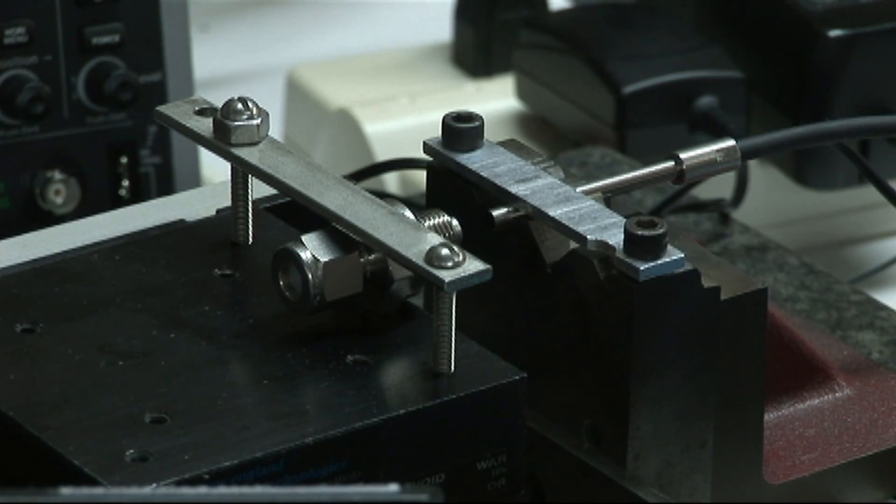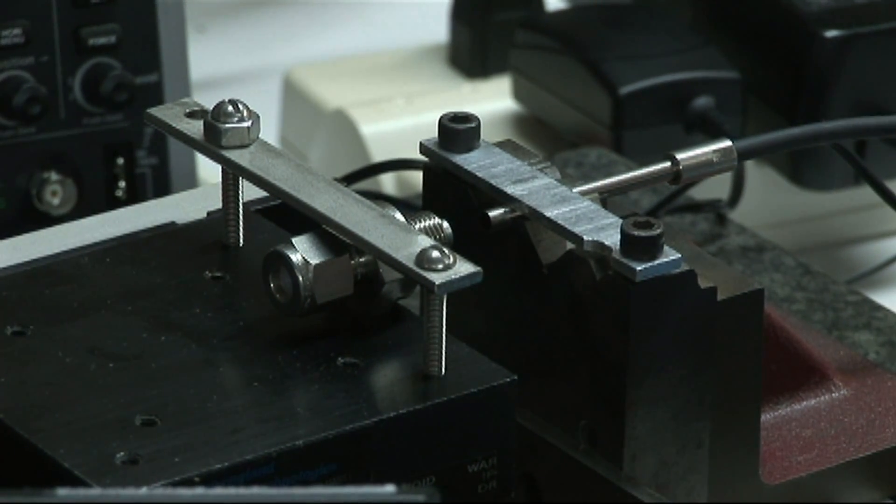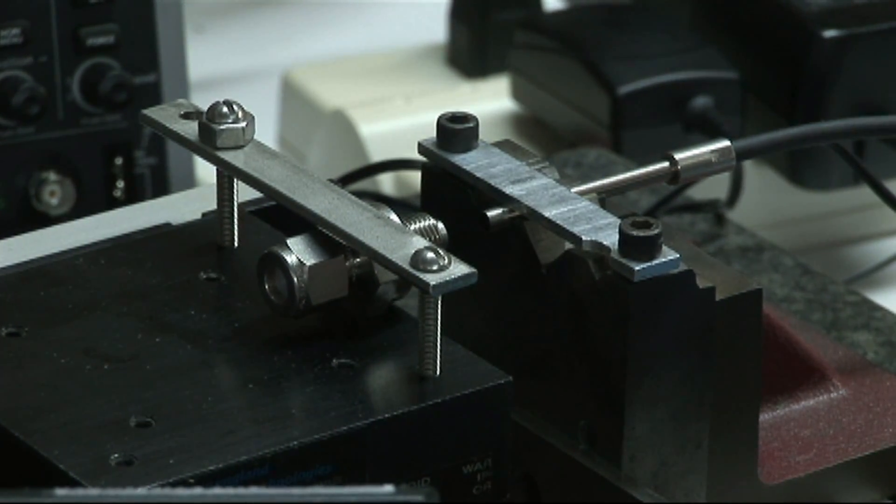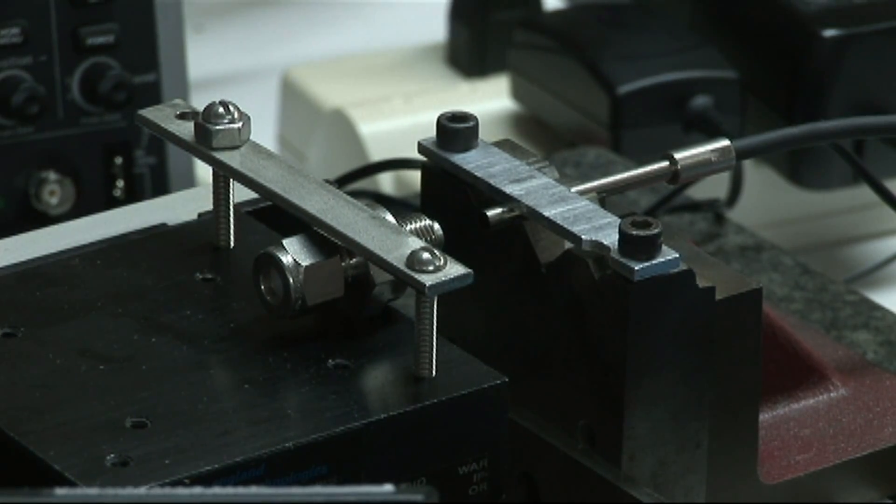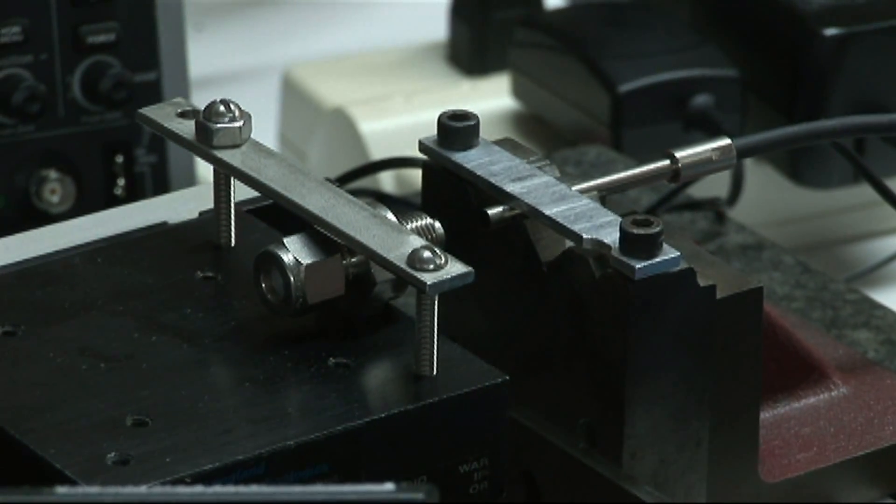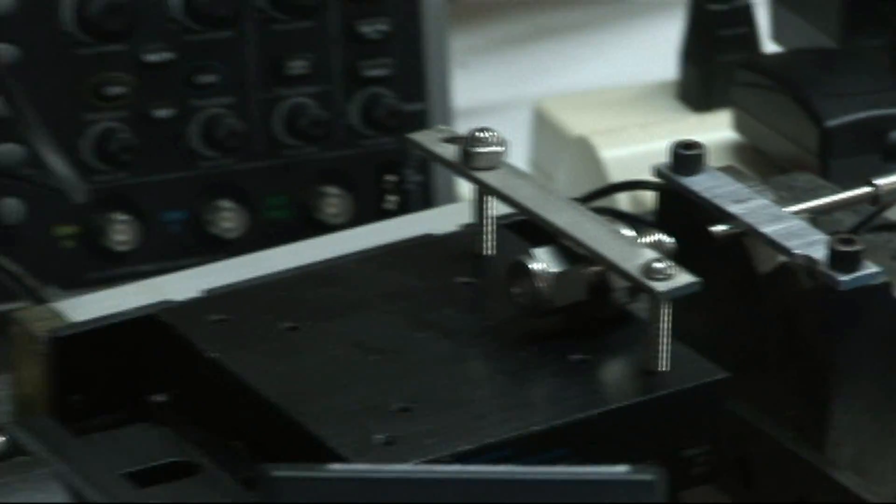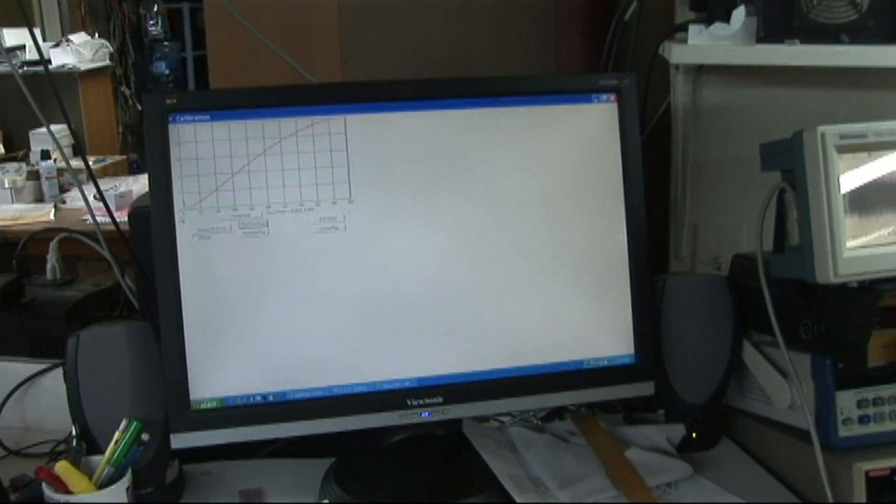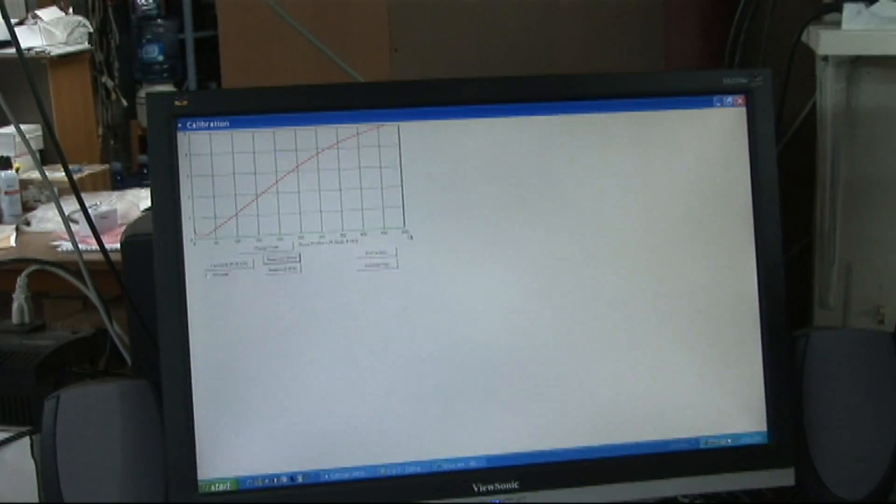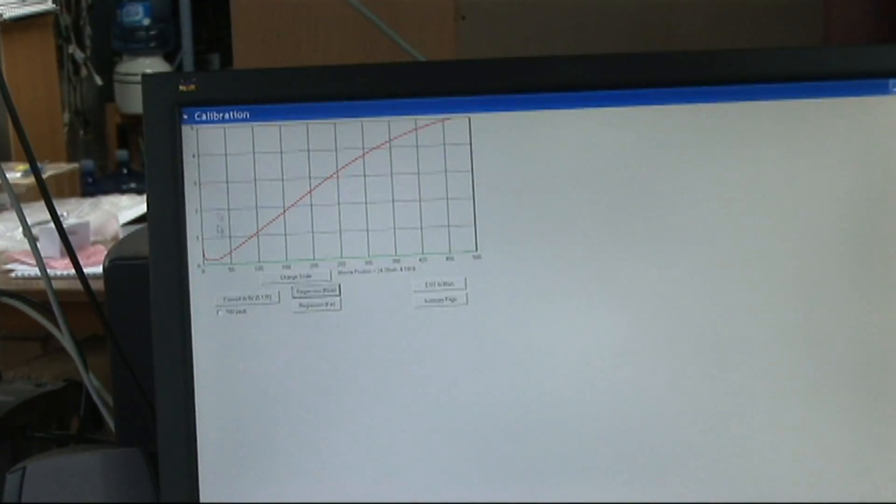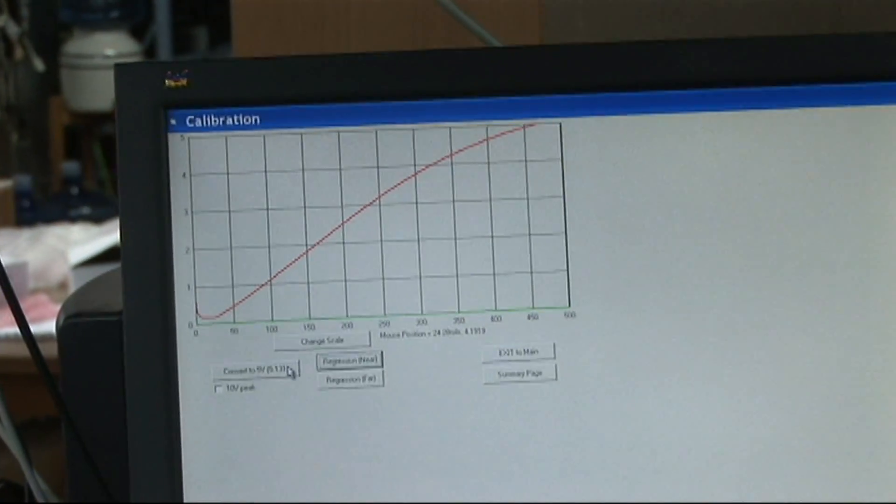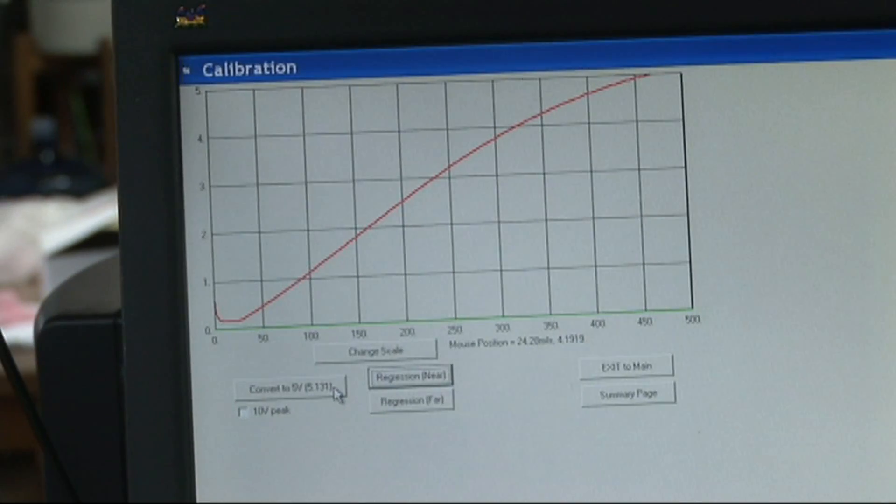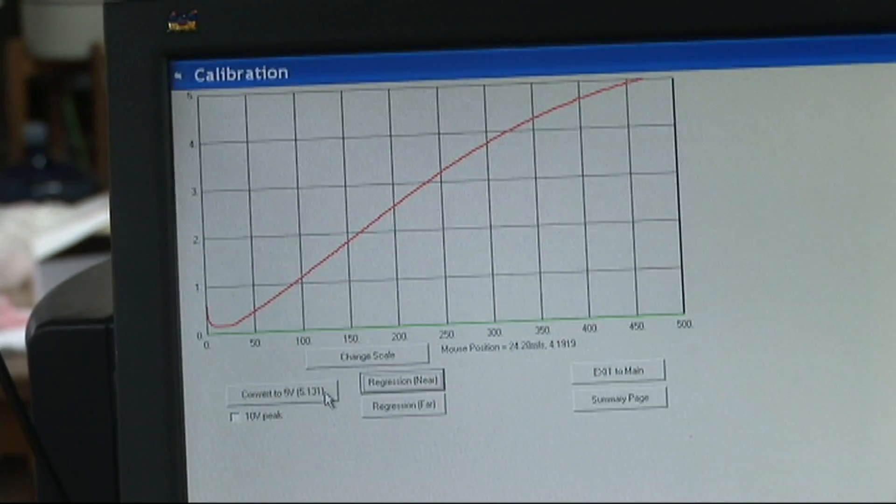Now, when this is done, we'll be at exactly one-half inch gap from the sensor. And now, if we could pan over here to the screen, you can see the result of this calibration. We have from zero to five hundred mils, zero to five volts up here. You can see that the sensor is maximized at 5.131 volts.